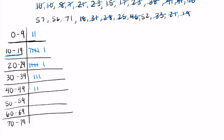50 and 59, one, two, three. 60 and 69, well we don't have any so I can either put a zero or leave it blank. We'll put a zero there for now. And then 70 and 79, I've got one.